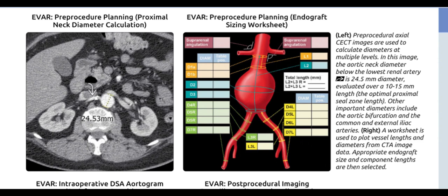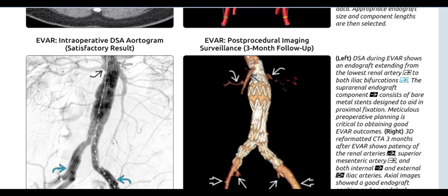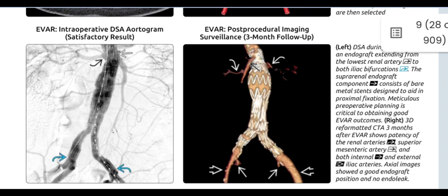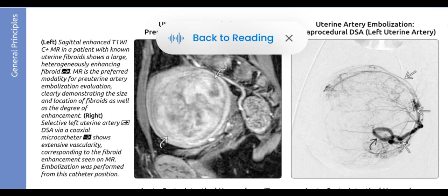Other important diameters include the aortic bifurcation and the common and external iliac arteries. A worksheet is used to plot vessel lengths and diameters from CTA image data, and appropriate endograft size and component lengths are then selected. DSA during EVAR shows an endograft extending from the lowest renal artery to both iliac bifurcations. The suprarenal endograft component consists of bare metal stents designed to aid in proximal fixation. Meticulous pre-operative planning is critical to obtaining good EVAR outcomes. 3D reformatted CTA three months after EVAR shows patency of the renal arteries, superior mesenteric artery, and both internal and external iliac arteries, with axial images showing good endograft position and no endoleak.